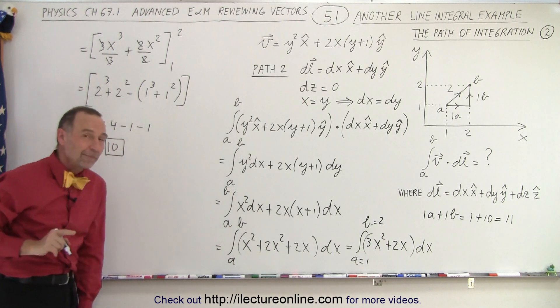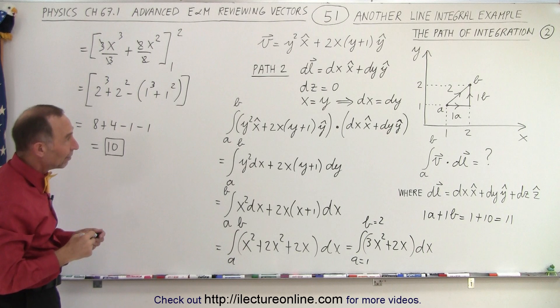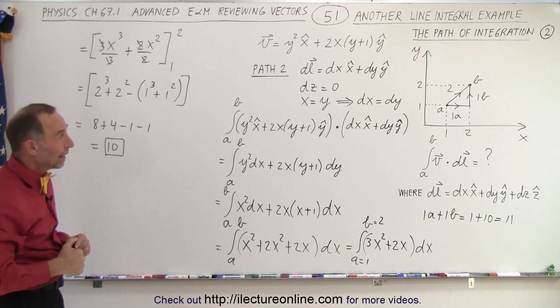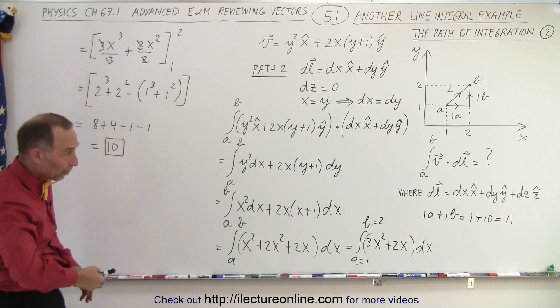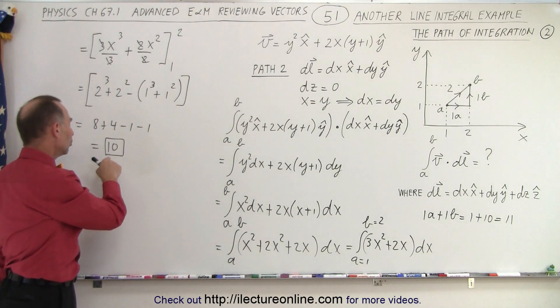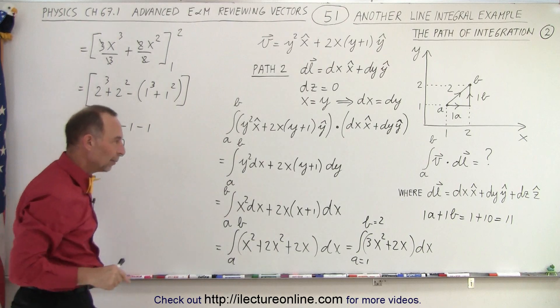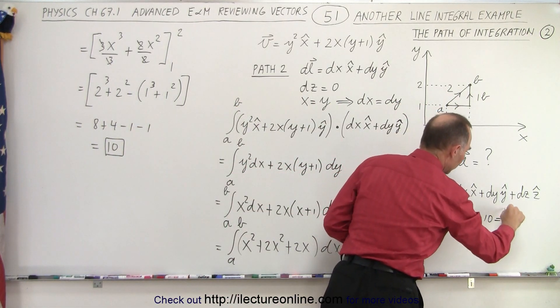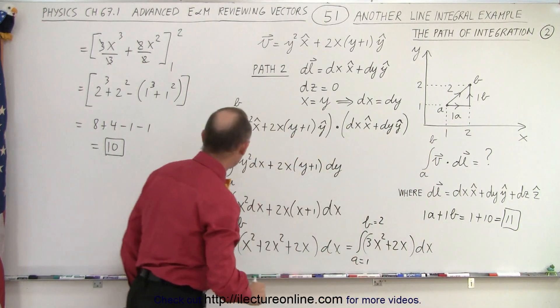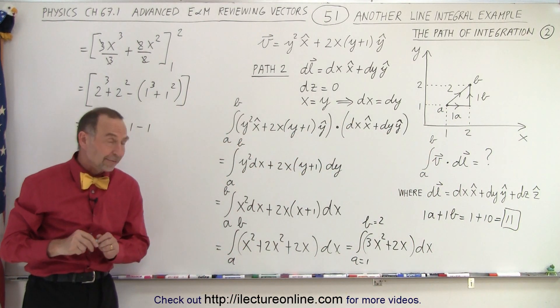Now here's something interesting. We took a different path to get from A to B, and when we took the line integral of that vector dotted with the DL, the displacement along that different path, path number 2, we got a different value than we got when we traveled along 1A and 1B. Here, the value was equal to 11, now we get the value equals to 10. What does that tell us?